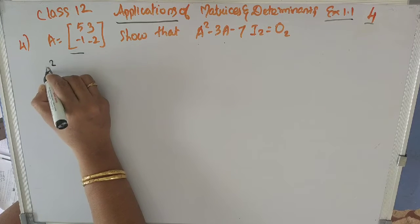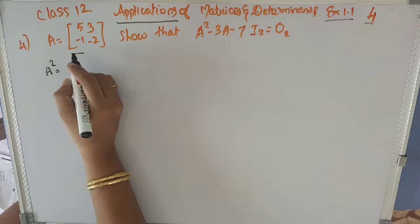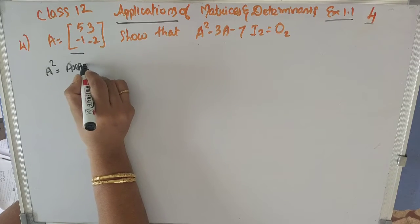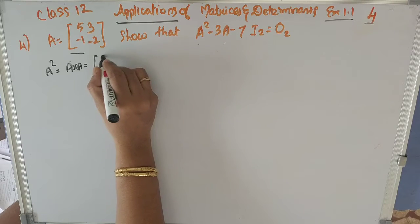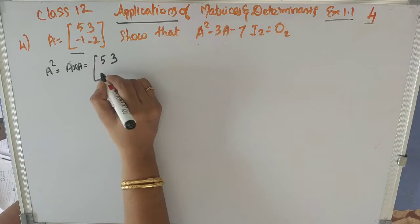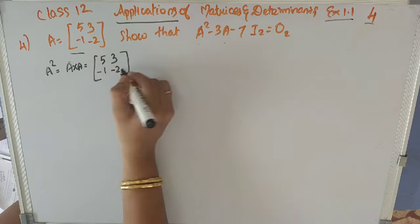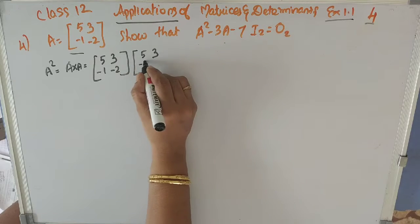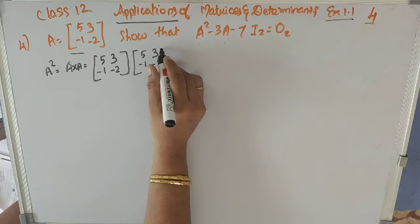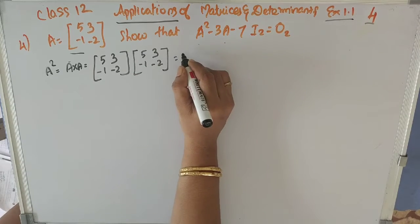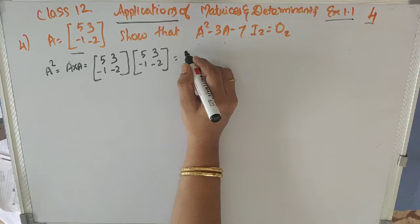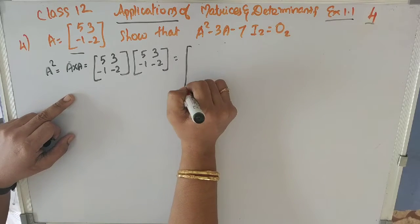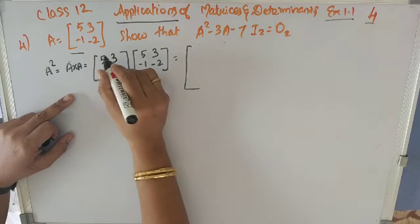First we have to find what is A squared. A squared is A into A. So what is A? It is the 2×2 matrix: 5, 3, minus 1, minus 2. We have to multiply each row with each column. That is row 1 into column 1 first.